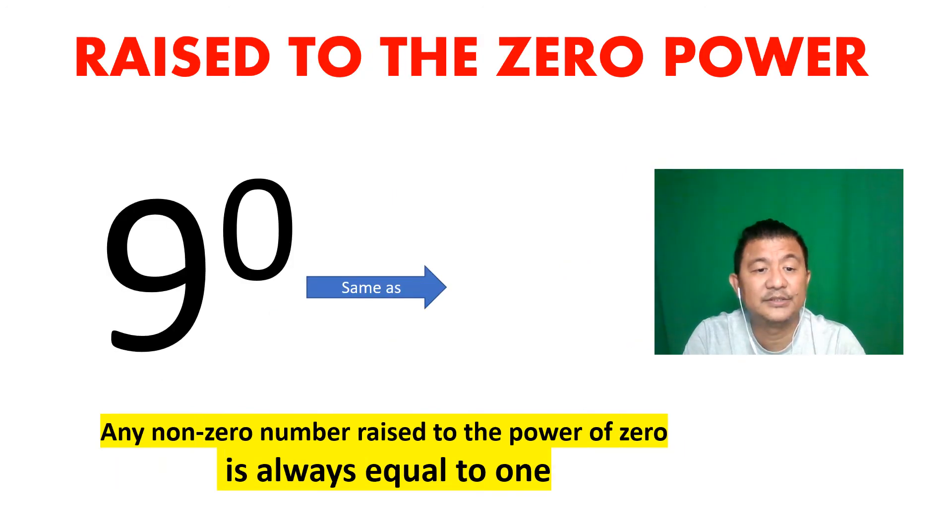Look at this: base of nine to the zero power. As long as your base is not zero, any base here to the zero power actually transforms into one. Any non-zero number raised to the power of zero is always equal to one.